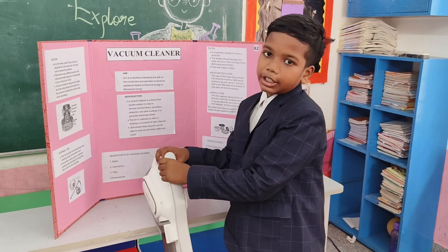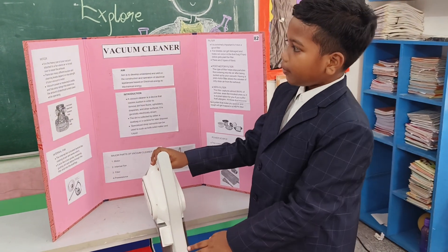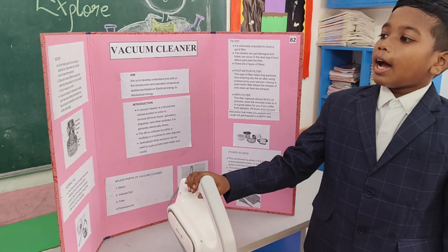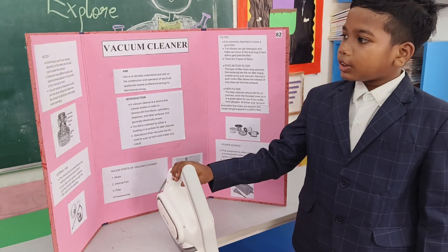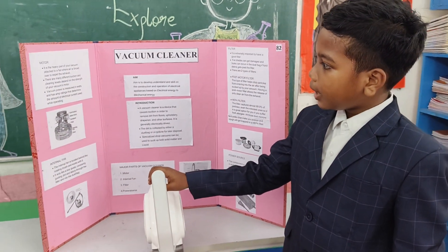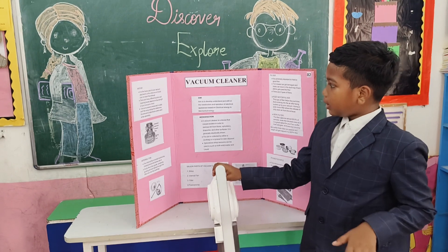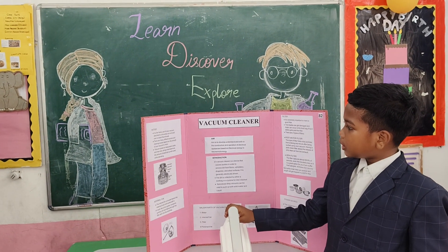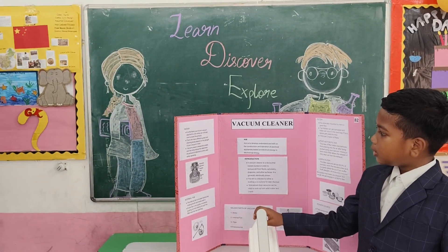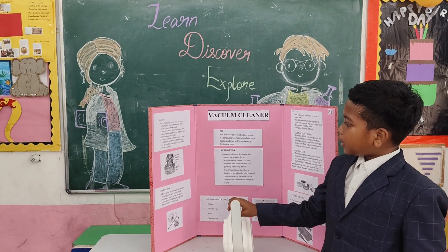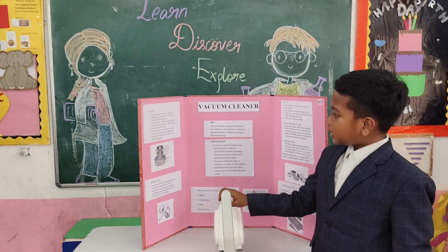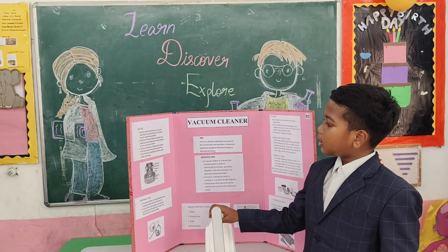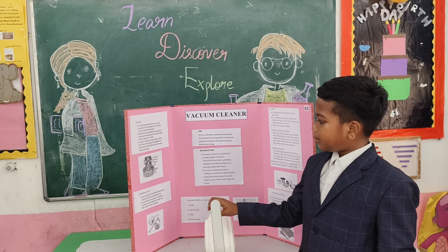Now, what is the motor? It is the heaviest part in your vacuum. It attaches to the fan where the air is pushed over to expand and exhaust. There are many different suction and cleaning levels depending on the strength of your vacuum motor. The vacuum power is measured in watts and has an air rating that determines the amount of electrical current used while operating.